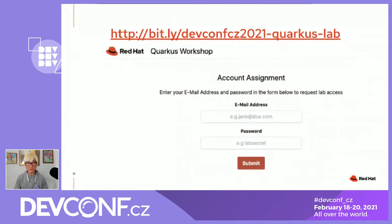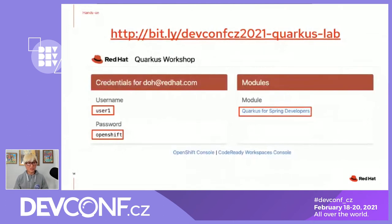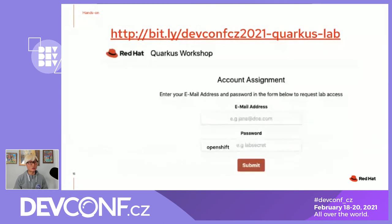When you access the BOINC URL, you'll see an account assignment page where you need to input any preferred email address. We're not going to store your email — it's a privacy concern and we'll delete all email addresses after the workshop. Enter your preferred email address and a password. You'll then be assigned a username such as user1, user10, or user25, with the password 'openshift'. When you click on the module 'Quarkus for Spring Developers', you'll find the actual lab instructions. Our magic password is all lowercase: openshift.